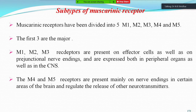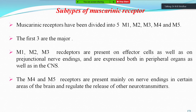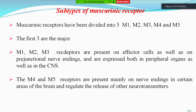The subtypes of muscarinic receptors are five: M1, M2, M3, M4, and M5. The first three — M1, M2, and M3 — are major, whereas M4 and M5 are not as major. M1, M2, and M3 receptors are present on effector cells as well as on pre-junctional nerve endings, and are expressed in both peripheral organs and the central nervous system. M4 and M5 receptors are present mainly on nerve endings in certain areas of the brain and regulate neurotransmitter release.